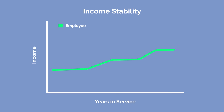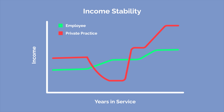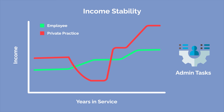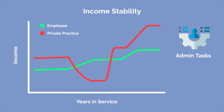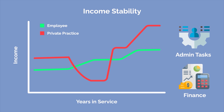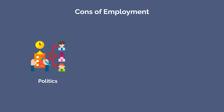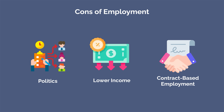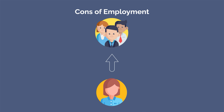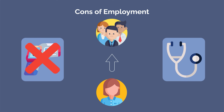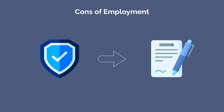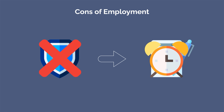Employed positions, whether in academia or a community hospital, have their pros and cons as well. The pros include a more stable income and less responsibility. While your income as an employee won't be as high as private practice, its stability is guaranteed, and you don't need to be involved in many administrative tasks required to run a practice. The cons of being an employee include politics, less income, and contract-based employment. You answer to hospital administration, and you're only protected for as long as you're under contract — when your contract ends, you don't have long-term guarantees for what comes next.